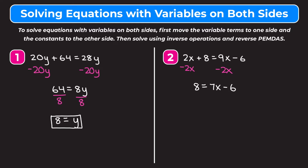Now I need to get the constants to the other side of my equation, so I need to get rid of this minus 6 on the right side. I'm going to do that by adding 6 to both sides. On the left, 8 plus 6 is 14. On the right, the minus 6 and the positive 6 cancel out to 0, and we are left with 7X. Finally, to get rid of this 7 that's being multiplied, we divide both sides by 7. We get 2 on the left and X on the right, so X equals 2.